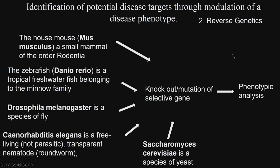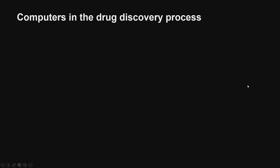This is a long approach. You can test it on small mammals, zebrafish, Drosophila, C. elegans, and yeast — Saccharomyces — and get the phenotypic analysis done. In the reverse genetic approach, you may not know which gene needs to be knocked out to arrive at a particular phenotype, so it can be a trial and error approach. Both forward and reverse genetic approaches are used for identifying potential disease targets through the modulation of disease phenotypes.